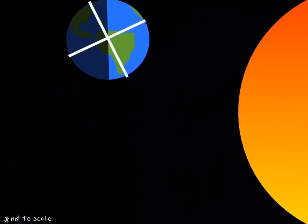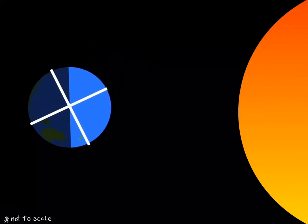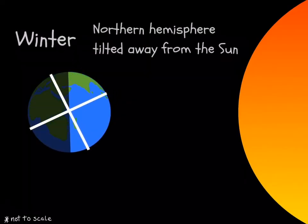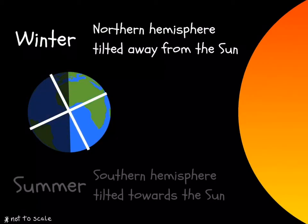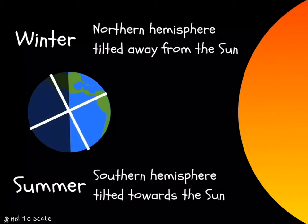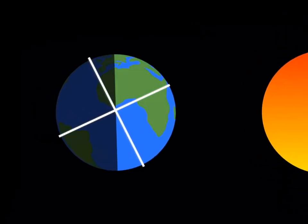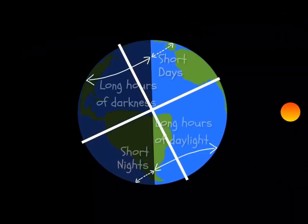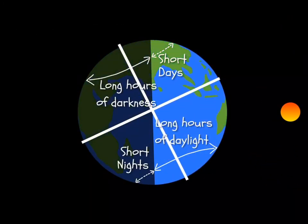When the northern hemisphere is tilted away from the Sun, it is in winter. Temperatures are colder and there are very long hours of darkness with very few hours of daylight. But at the same time, the southern hemisphere is tilted towards the Sun, meaning it is in summer. Temperatures are warmer with long hours of daylight and very few hours of darkness.